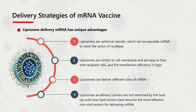Liposomes have four key advantages: 1. Liposomes are spherical vesicles which can encapsulate mRNA to resist the action of nuclease. 2. Liposomes are similar to cell membranes and are easy to fuse with recipient cells, so transfection efficiency is high. 3. Liposomes can deliver different sizes of mRNA. 4. Liposomes as delivery carriers are not restricted by the host. Up until now, lipid vectors have become the most effective non-viral carriers for delivering mRNA.